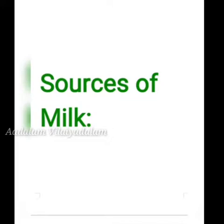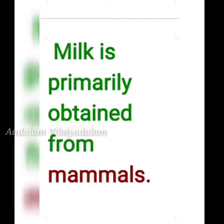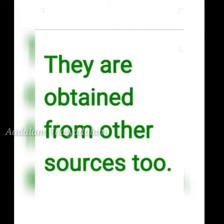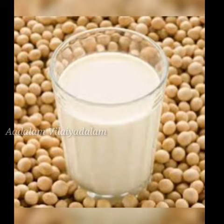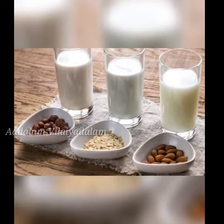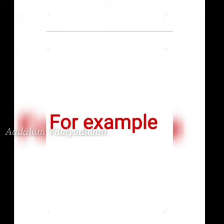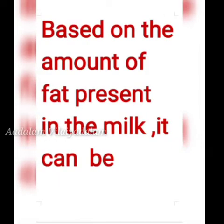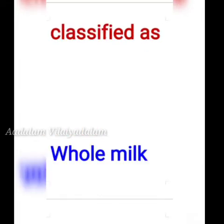So cow milk is commonly used. Now, sources of milk: milk is primarily obtained from mammals. It is also obtained from other sources, such as soya milk and nut or seed-based milk. Based on the amount of fat present in the milk, it can be classified as whole milk, low-fat milk, and fat-free milk.